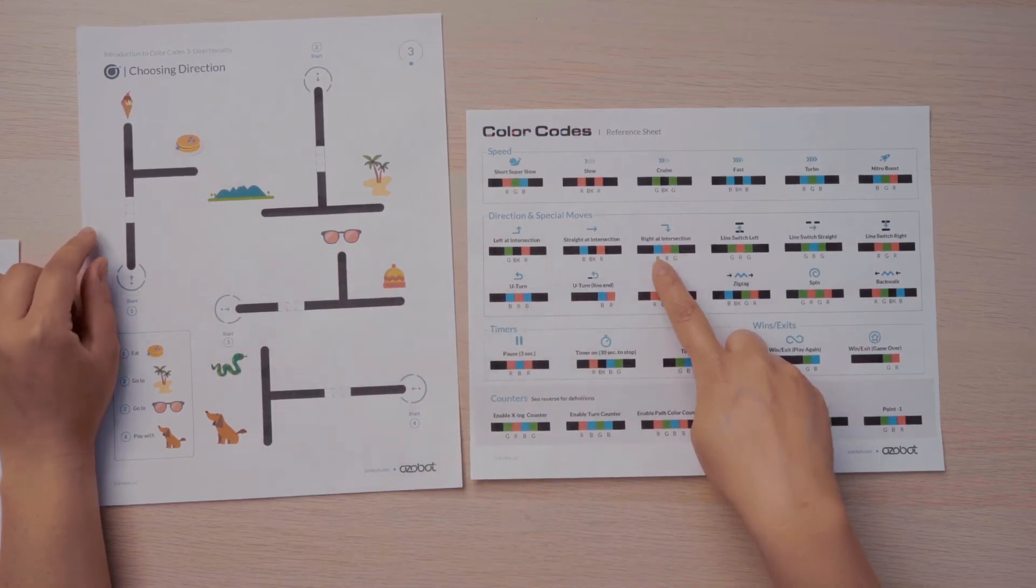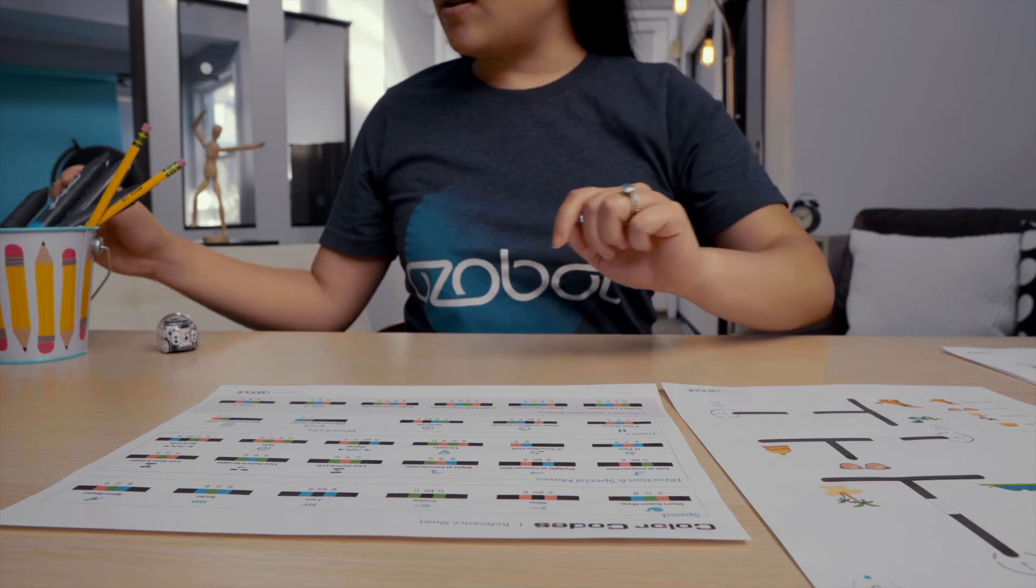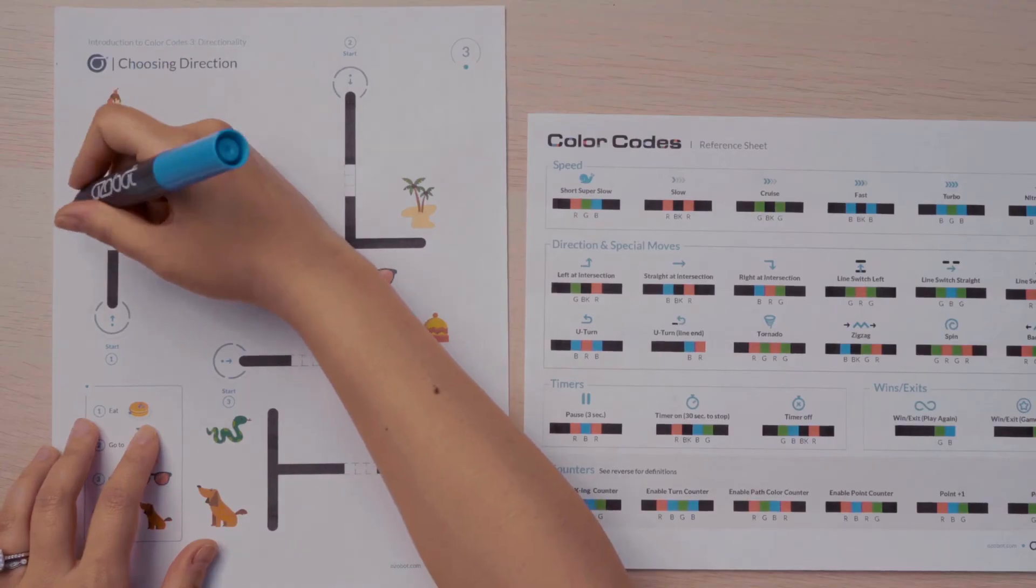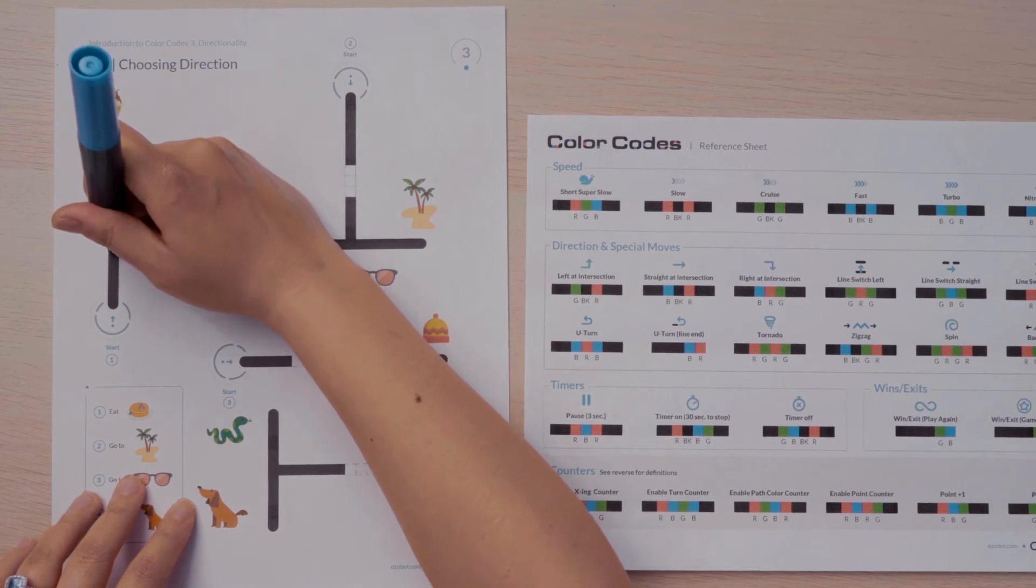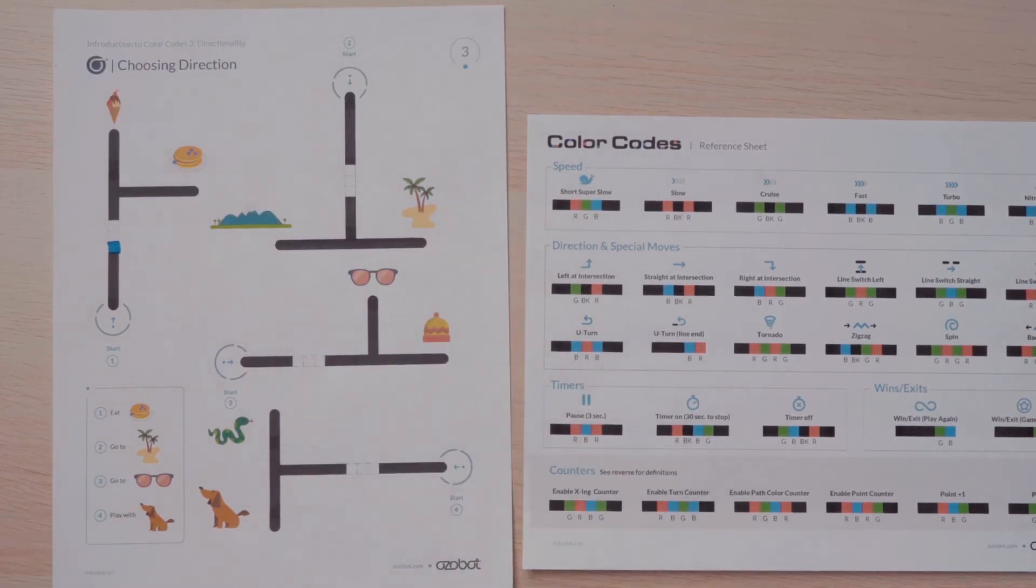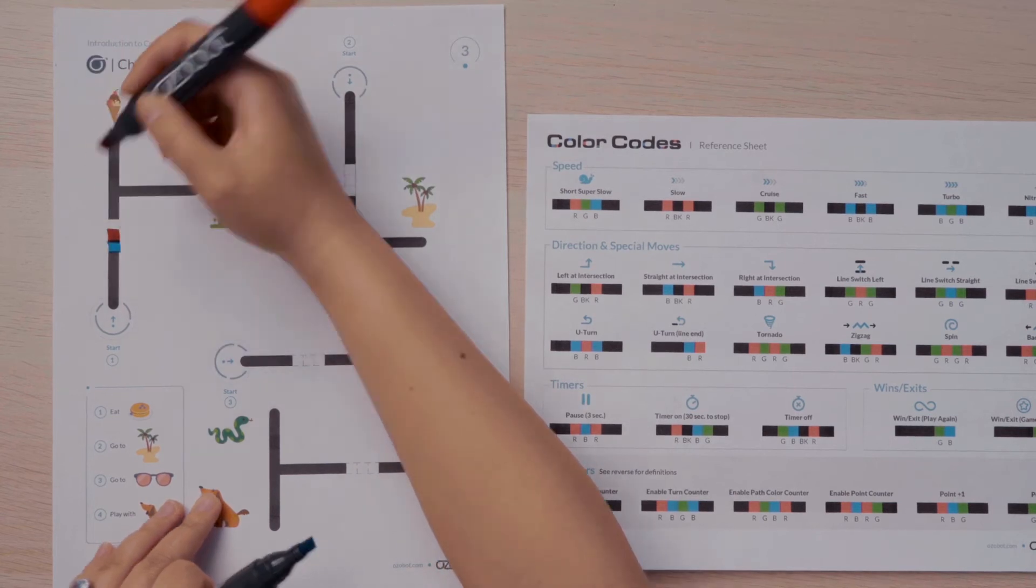So I'm going to go to my color code reference sheet, and I know that the right at intersection is blue, red, green. So I'll start with my blue marker. I know the bot is traveling from this direction, so blue needs to go first, then red, then green.